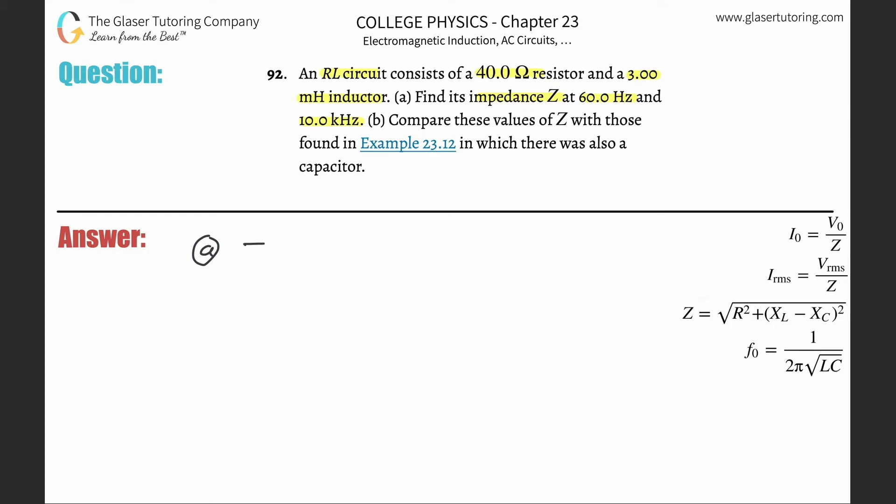To find the impedance, we have a formula here that the total impedance is going to be equal to the square root of the resistance squared plus the difference between the reactive inductance X_L and the reactive capacitance X_C squared. If the circuit here, as it is mentioned, does not include a capacitor, like it's not an RLC circuit, then this just goes bye-bye. So essentially now this Z or the impedance will reduce down to root of R squared plus X_L squared.